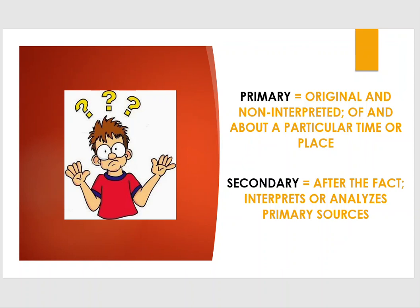Still confused? Think of it this way. Primary sources are original and noninterpreted. They are of and about a particular time or place. Secondary sources, on the other hand, are produced after the fact. They interpret or analyze primary sources.